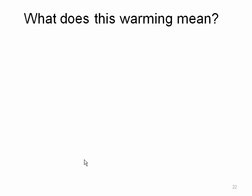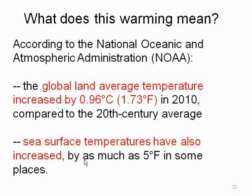So what are the consequences of this warming? According to NOAA, the average global land surface temperature increased by just under one degree Celsius, about 1.73 degrees Fahrenheit, in 2010 compared to the 20th century average over the last 100 years. Sea surface temperatures have also increased, in some cases by as much as 5 degrees Fahrenheit — significant for enhancing melting ice in Arctic regions. We are detecting and measuring significant changes in temperature. These may seem small, but from the standpoint of changing ice packs and enhancing surface changes, they are very important over time.